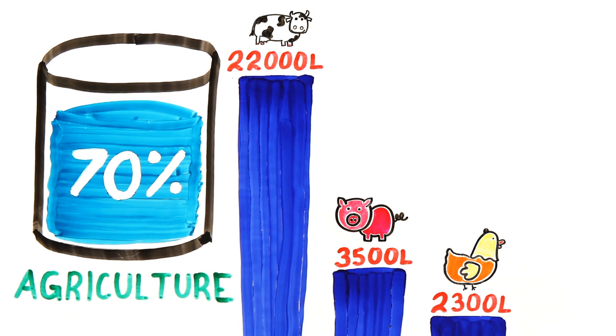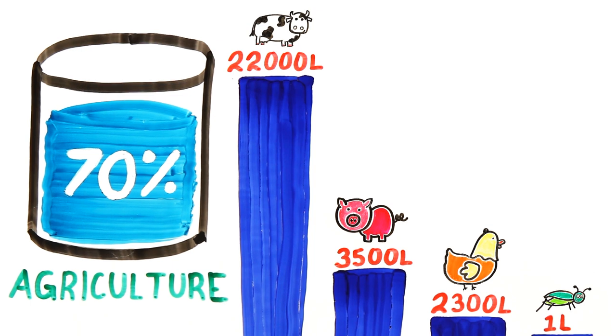But to make 1 kilogram of crickets, it only requires 1 liter of water. This is because insects can become fully hydrated just from the food that they eat.